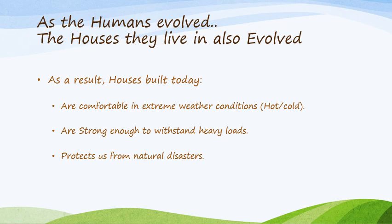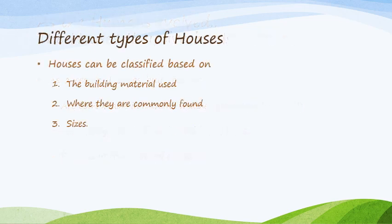Now, children, as humans evolved — meaning they gradually developed, their brain developed — the houses they lived in also evolved. As a result, the houses built today are more comfortable in extreme weather conditions.